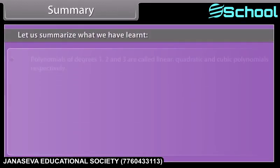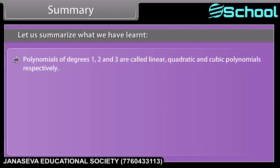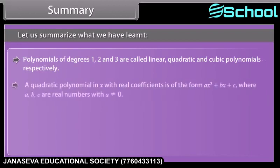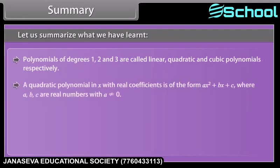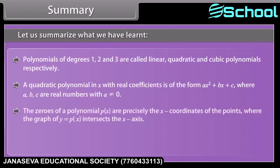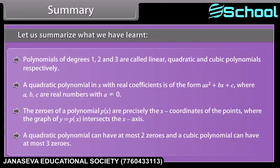Summary: Polynomials of degrees 1, 2, and 3 are called linear, quadratic, and cubic polynomials respectively. A quadratic polynomial in x with real coefficients is of the form ax squared plus bx plus c, where a, b, and c are real numbers with a not equal to 0. The zeros of a polynomial p(x) are precisely the x-coordinates of the points where the graph of y equals p(x) intersects the x-axis. A quadratic polynomial can have at most two zeros, and a cubic polynomial can have at most three zeros.